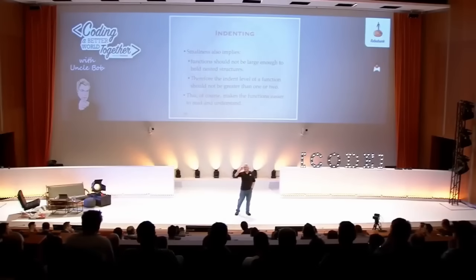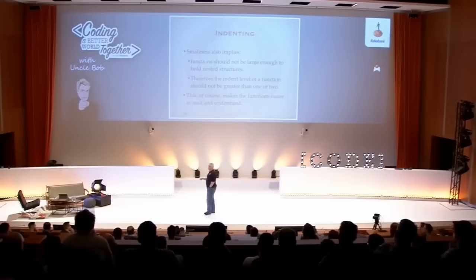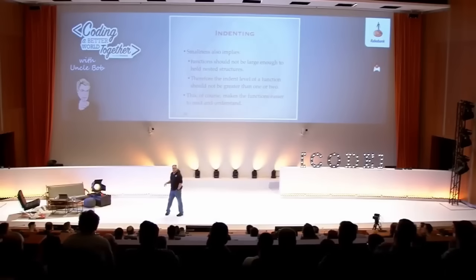Now, that can't be a hard and fast rule, because there are times when you want to pass a Boolean around. For example, you are setting the state of a switch — set switch, bool. That's fine. But don't use it as a little testing argument into functions. That's just rude.